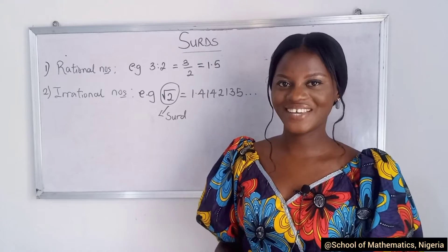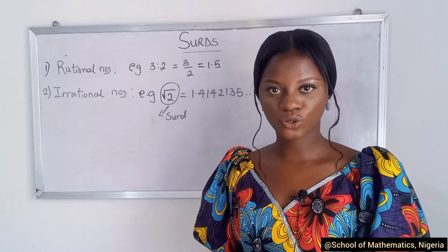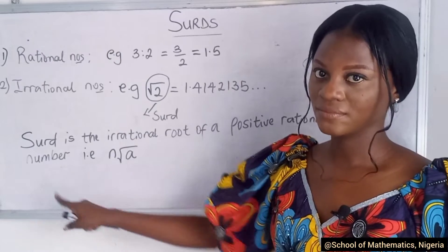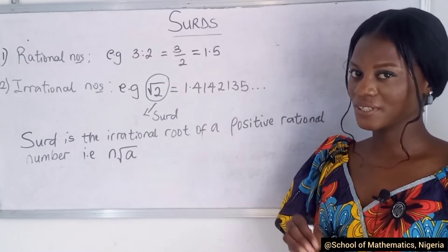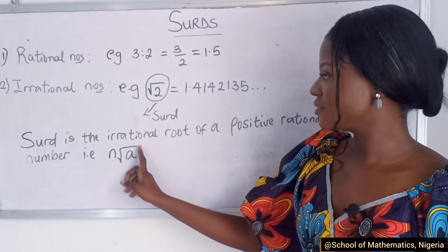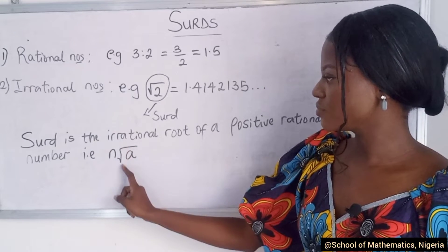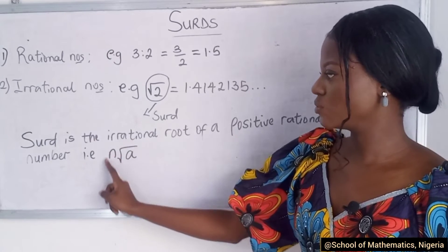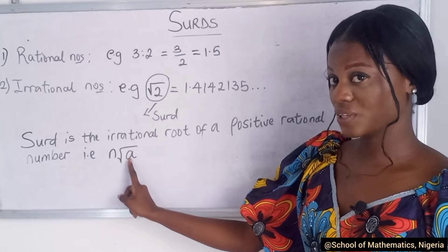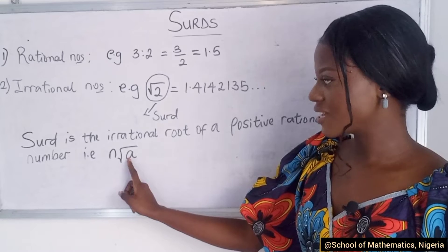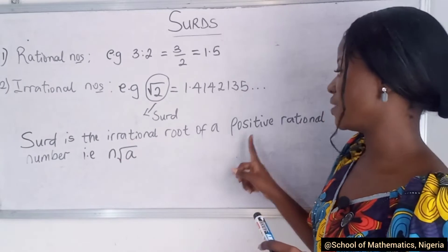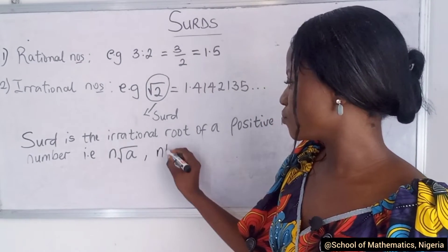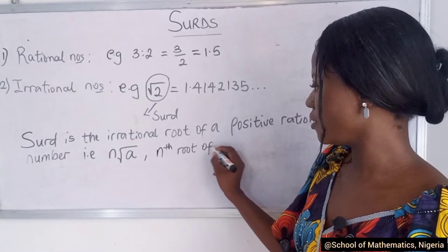Let's dive in and define a surd. A surd is the irrational root of a positive rational number. Now you know what rational and irrational numbers are. A surd is the irrational root of a positive rational number. This is called the nth root of a. This has to be positive — it can't be negative. That's why we have the positive rational number.